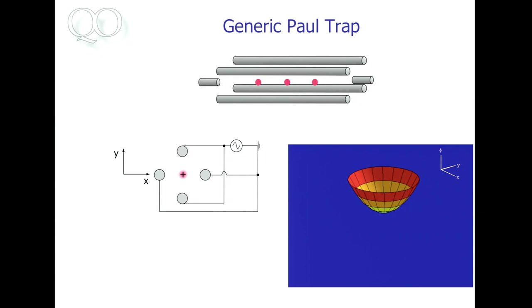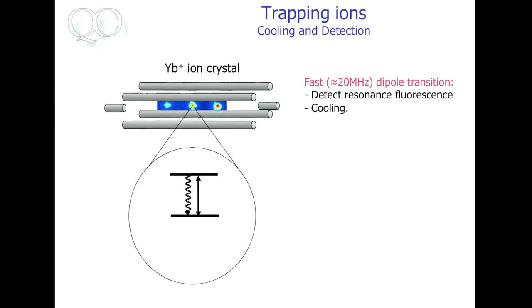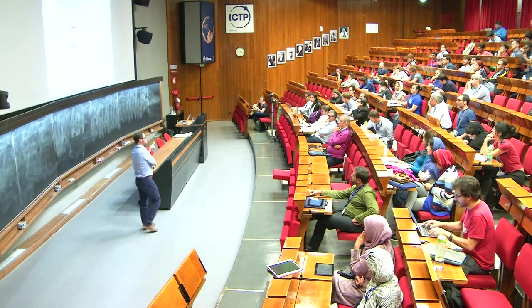But what Wolfgang Paul realized is that you can make a dynamic potential. And that's what I'll show you now. So now we apply these voltages alternatingly, positive here, then positive here, and so on. So that's the potential that you get then. And then if you do this fast enough, your ion just sits in the middle and doesn't know where to go anymore. And you can show that on time average, you get actually a harmonic potential here. So you have now trapped your ion in an effective harmonic potential.